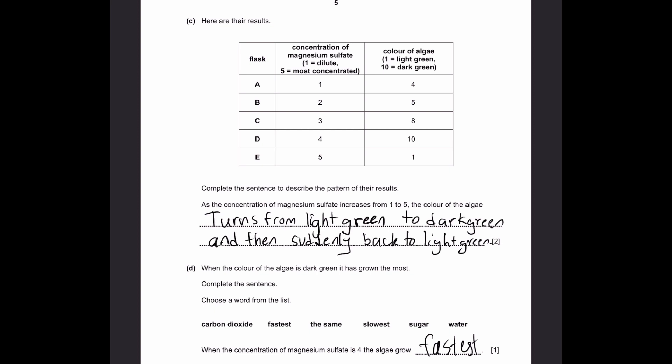Complete the sentence to describe the pattern of results. As the concentration of magnesium sulfate increases from one to five, the color of the algae turns from light green to dark green gradually from A to D, and then suddenly back to light green from D to E.